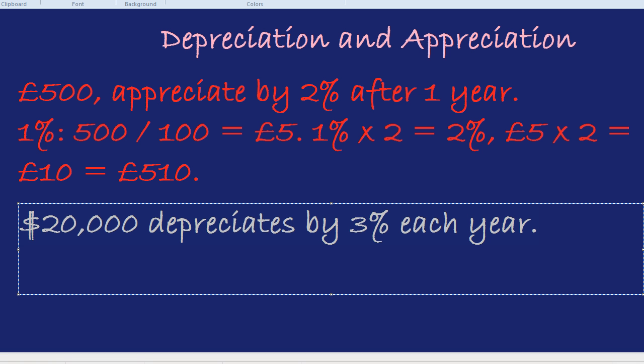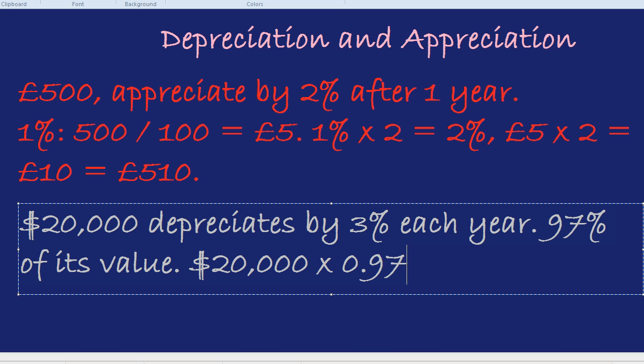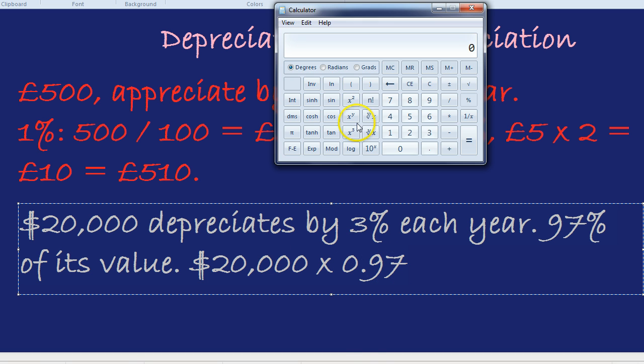If something's gone down by 3%, and it started off with 100% of its value, when you first bought the car, it had all its value still there - it was still worth $20,000. Now, we've taken off 3% for the first year. What percentage has it got left? It's got 97% of its value after one year. To find 97% using a calculator, you multiply the amount by 0.97, which is 97% as a decimal.